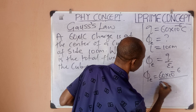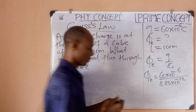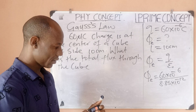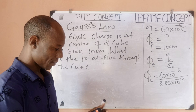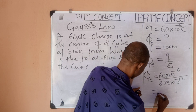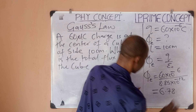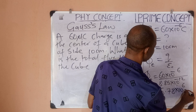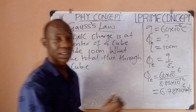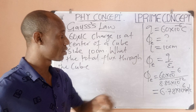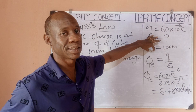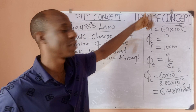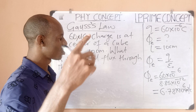Using Gauss's Law: phi equals Q enclosed divided by epsilon naught. So phi equals 60 times 10 to the power of minus 6, divided by 8.85 times 10 to the power of minus 12. That gives 60 divided by 8.85, which is 6.78, and 10 to the power of 6, so the total flux is approximately 6.78 times 10 to the power 6 newton meter squared per coulomb.